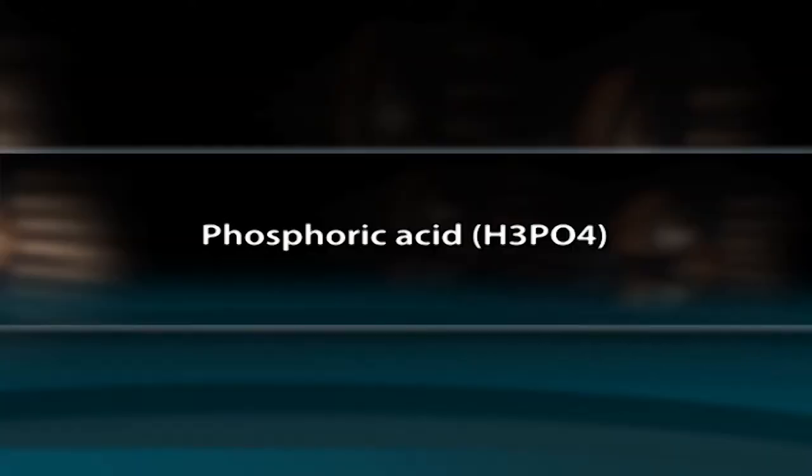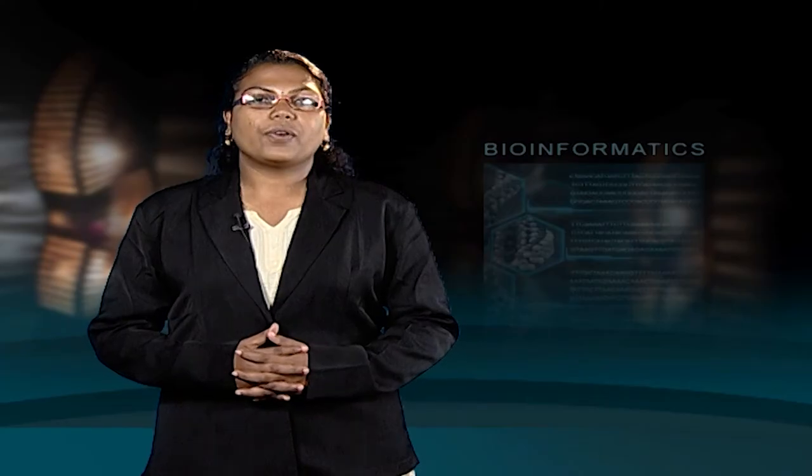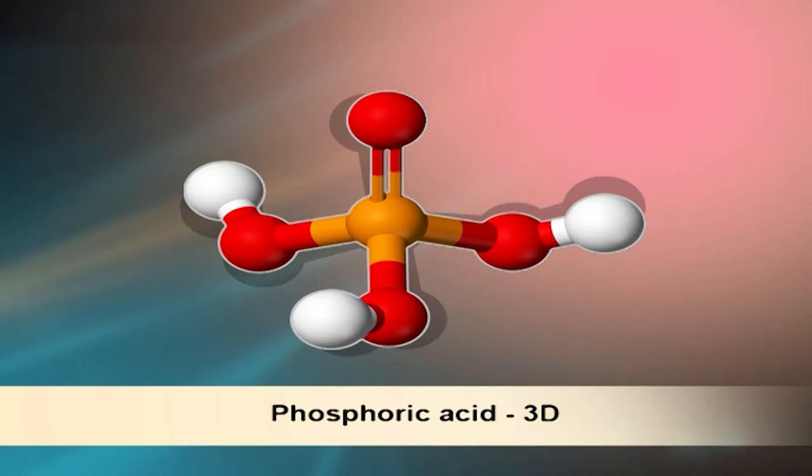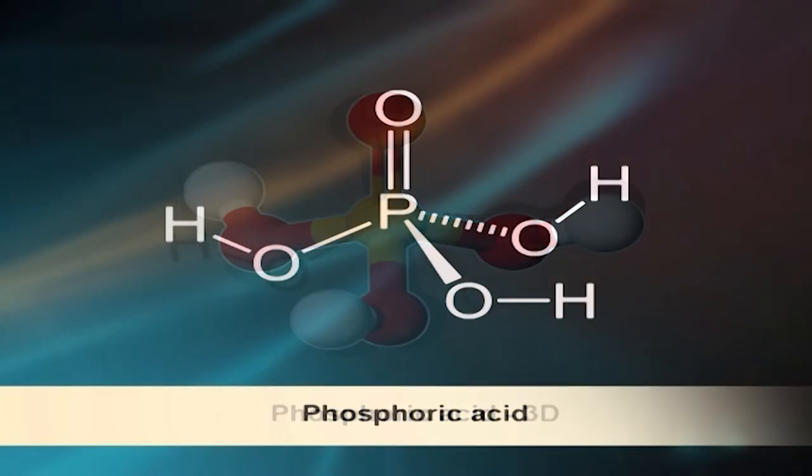Phosphoric acid (H₃PO₄) has three monovalent hydroxyl groups and a divalent oxygen atom, all linked to the pentavalent phosphorus atom.